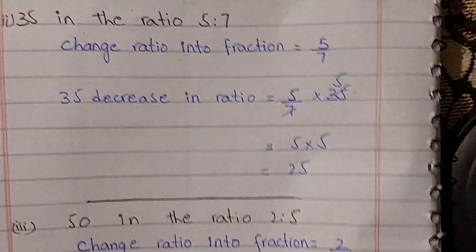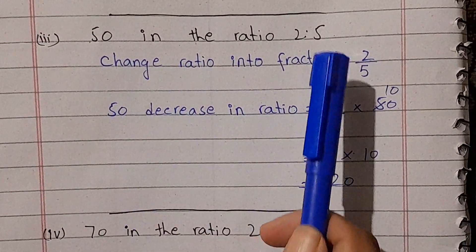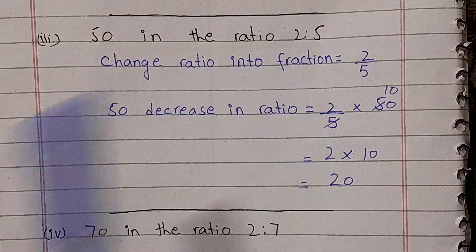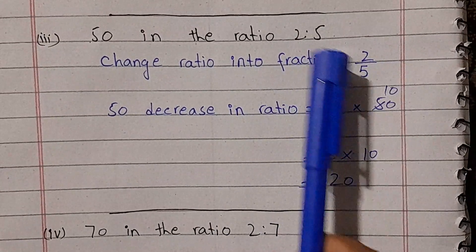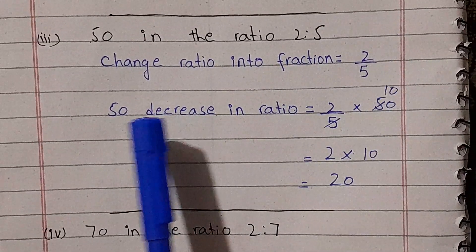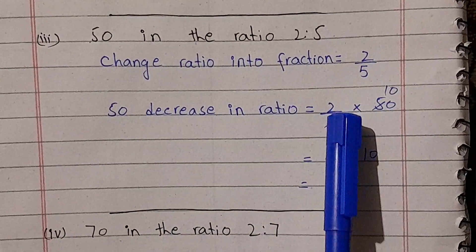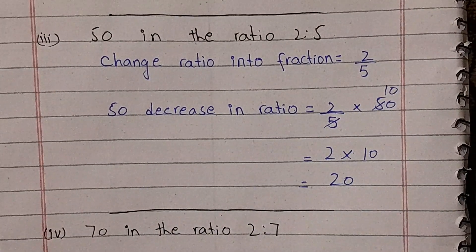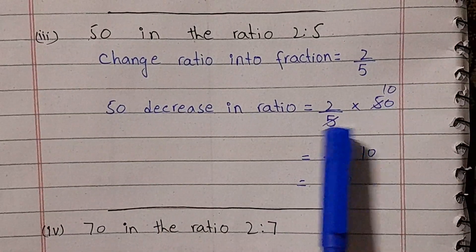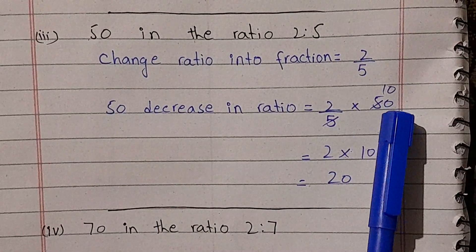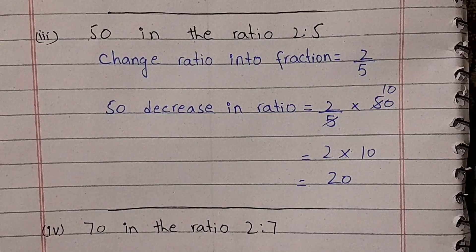Part number 3: decrease 50 in the ratio of 2 to 5. We change the ratio into a fraction: 2 over 5. We multiply 2 over 5 by 50. We divide 50 by 5, which gives 10, and then multiply by 2, giving us 20.